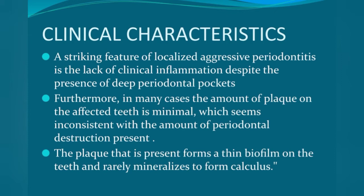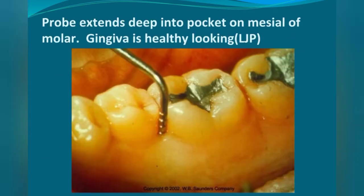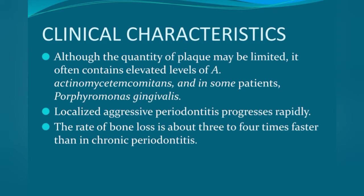The plaque that is present forms a thin biofilm on the teeth and rarely mineralizes to form calculus. While dental plaque is less in quantity, the concentration of bacteria responsible for periodontitis — Actinobacillus actinomycetemcomitans and Capnocytophaga — is high. This is why gingiva may look healthy yet a periodontal pocket is present. Although plaque is limited, it contains elevated levels of Actinobacillus actinomycetemcomitans and in some patients Porphyromonas gingivalis.